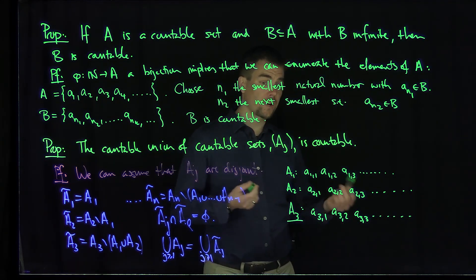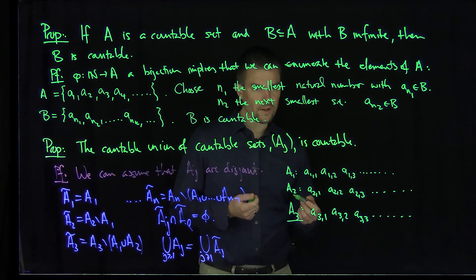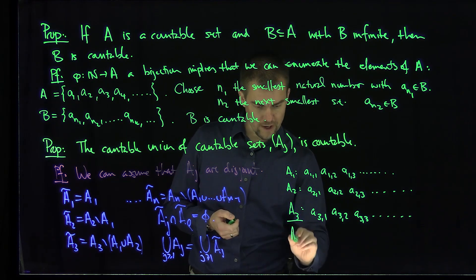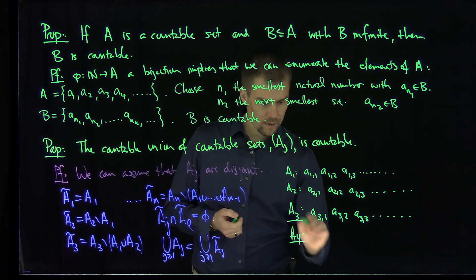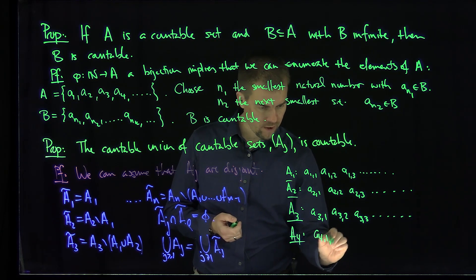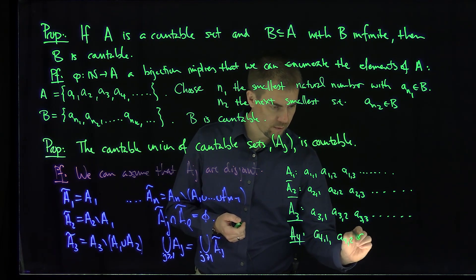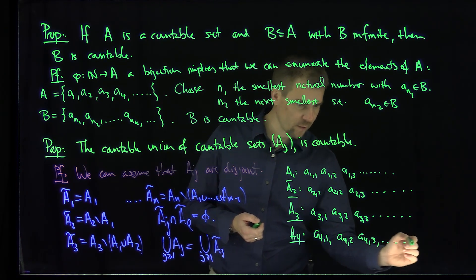And so what I need to do now is I need to show you how I'm going to construct this bijection. I'll do one more actually. A4 will be A4,1, A4,2, A4,3, and so on forever.